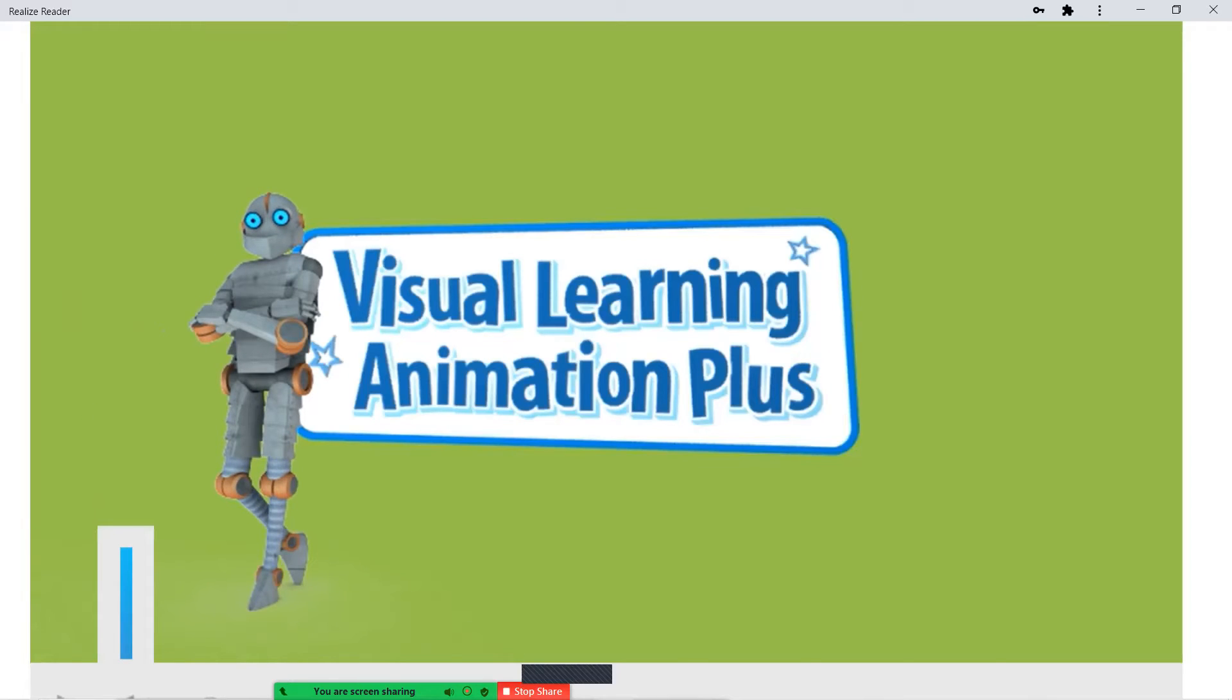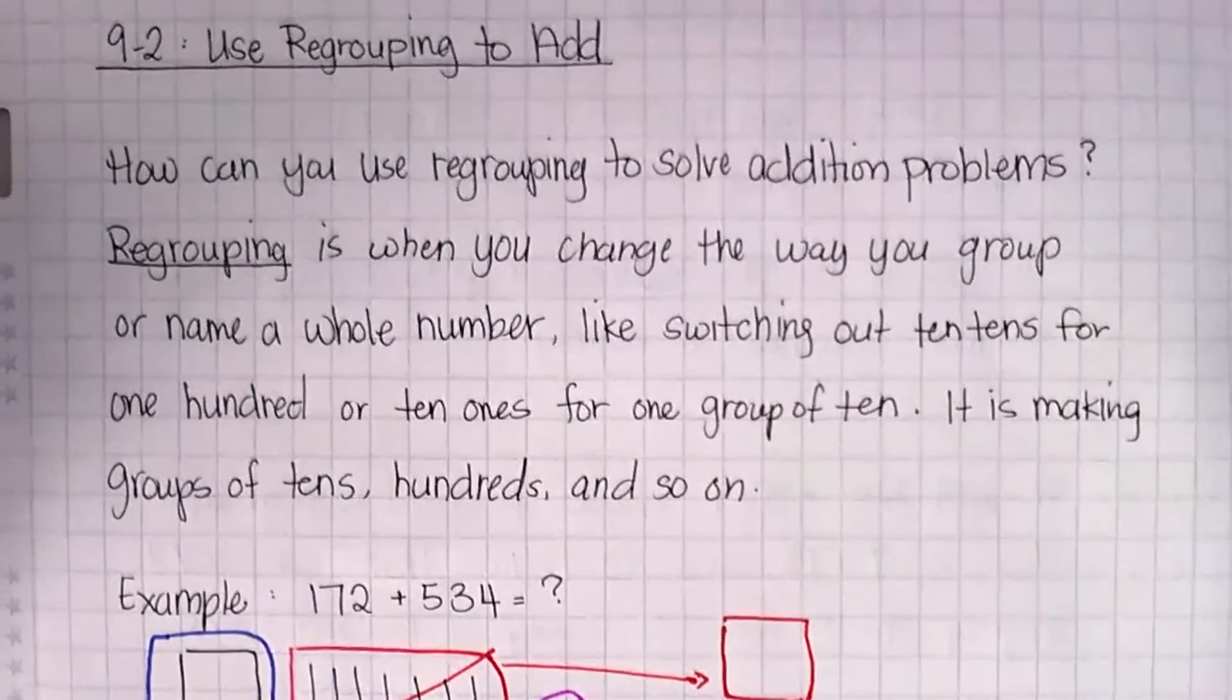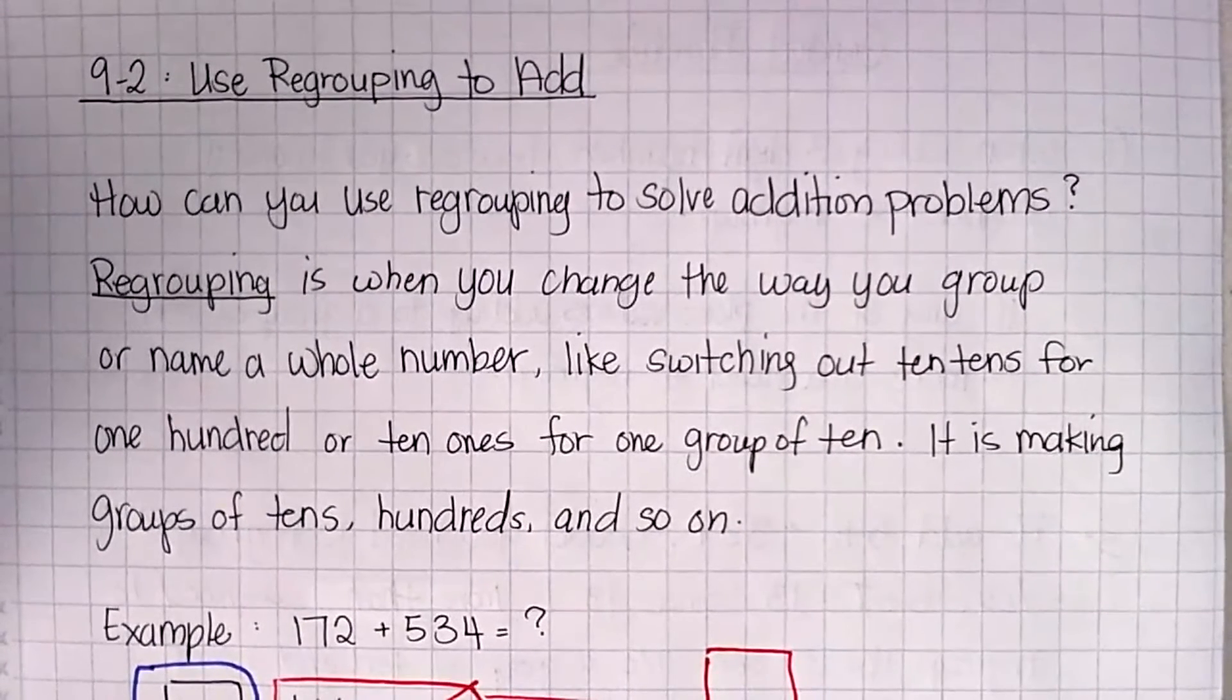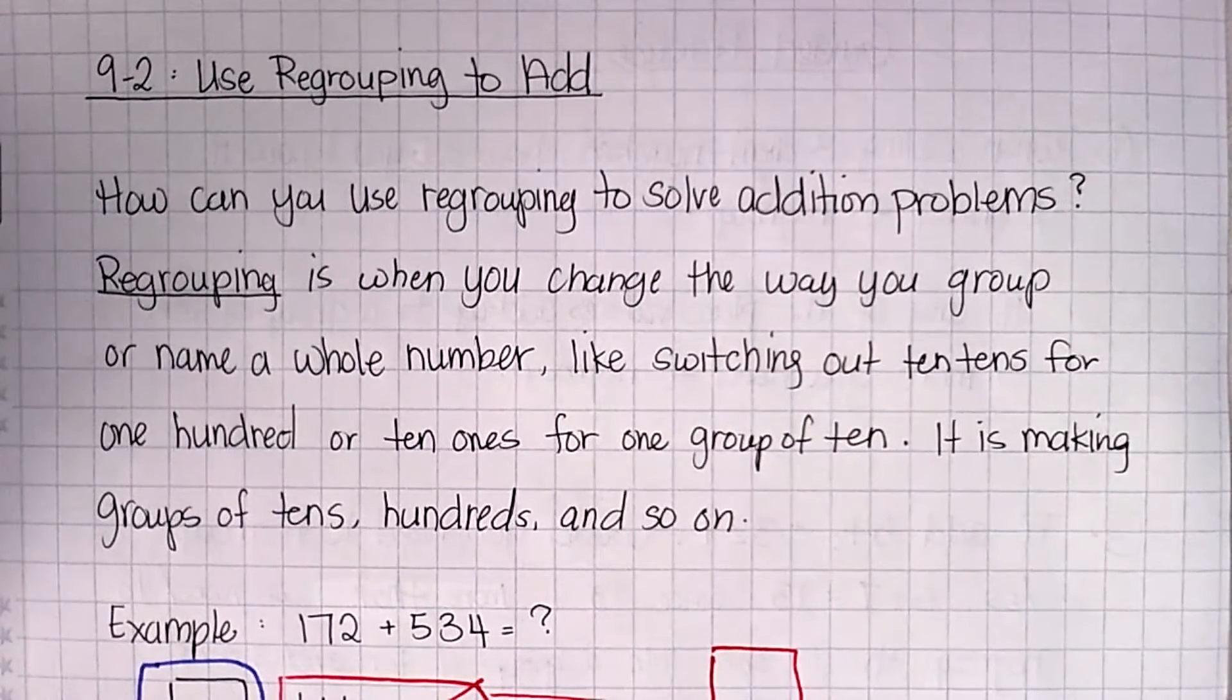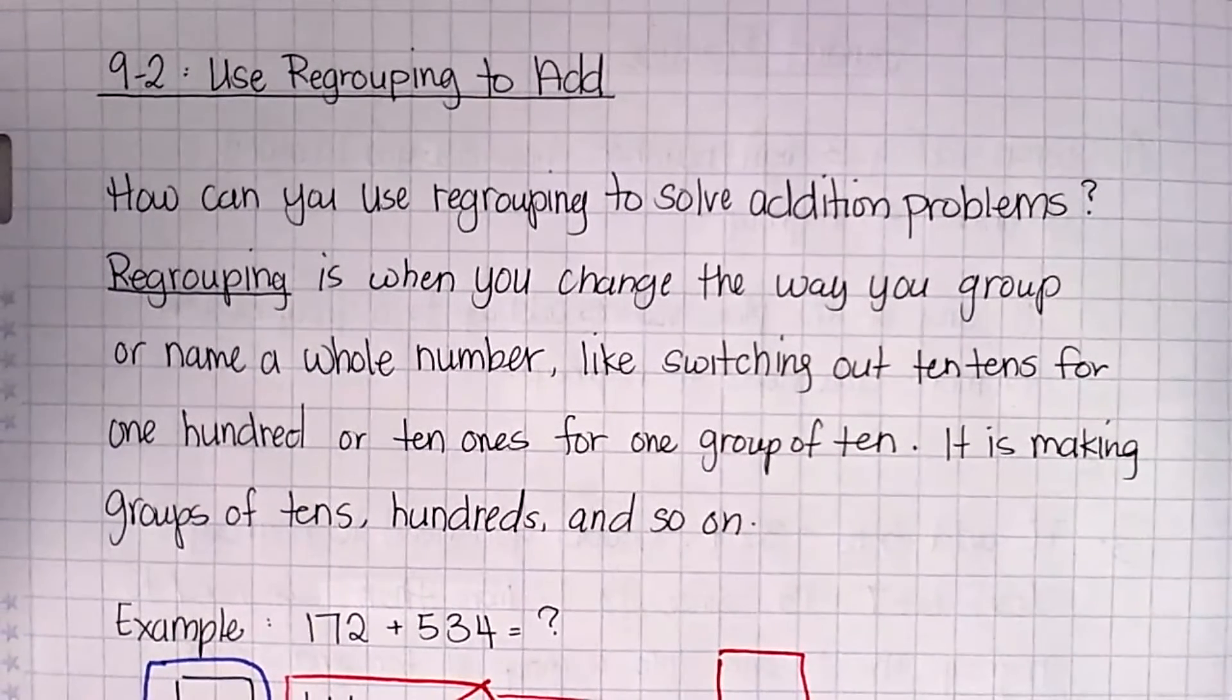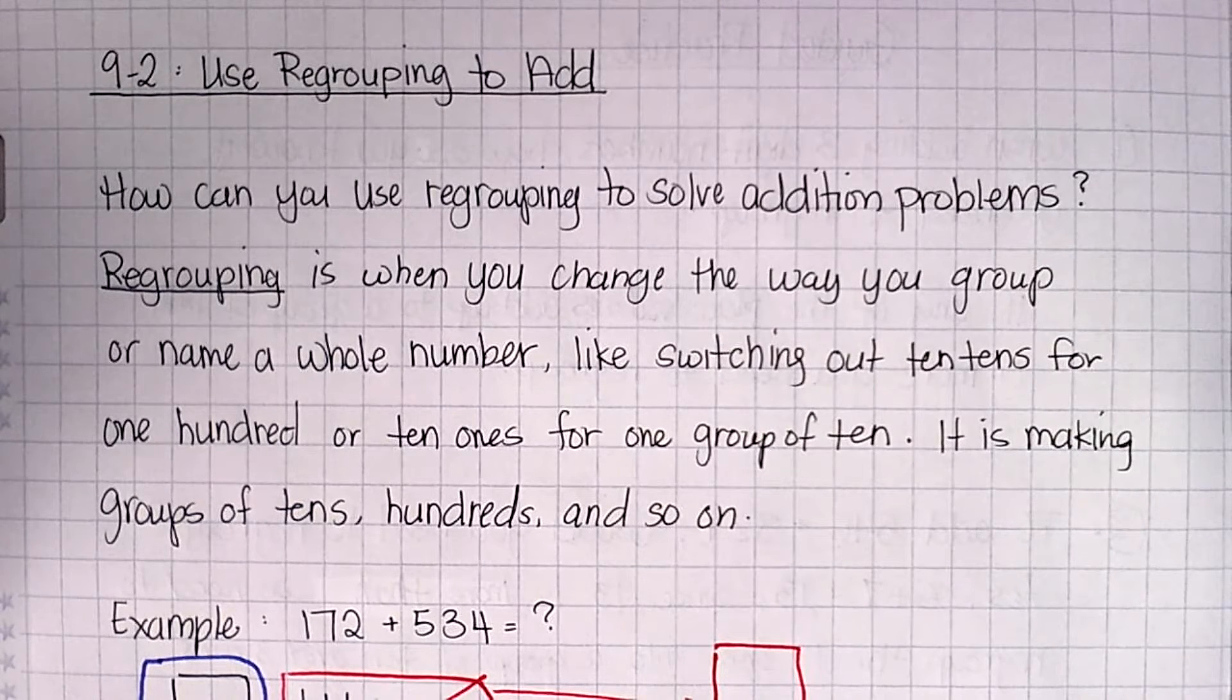All right. Let's go ahead and take a look at notes and our guided practice for this lesson. Now, I know that their table was a little bit confusing looking. You don't necessarily have to use it. You do need to know, however, how to switch out when you're using things like your base 10 blocks and how to regroup. So, how can you use regrouping to help you solve these problems?